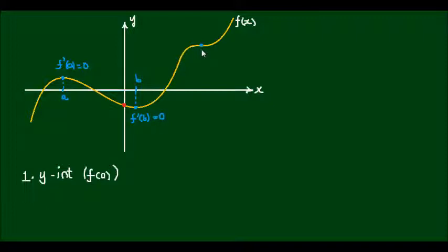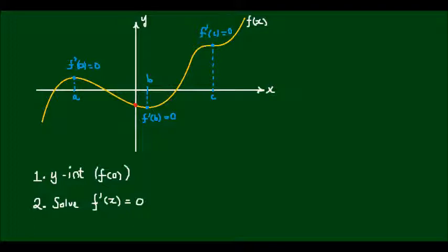And similarly for our final critical or stationary point, which we'll mark as c, again, the slope of this point is also equal to zero. So the second step is to find the critical points. And to do that, we solve the derivative function, f'(x) equals zero.